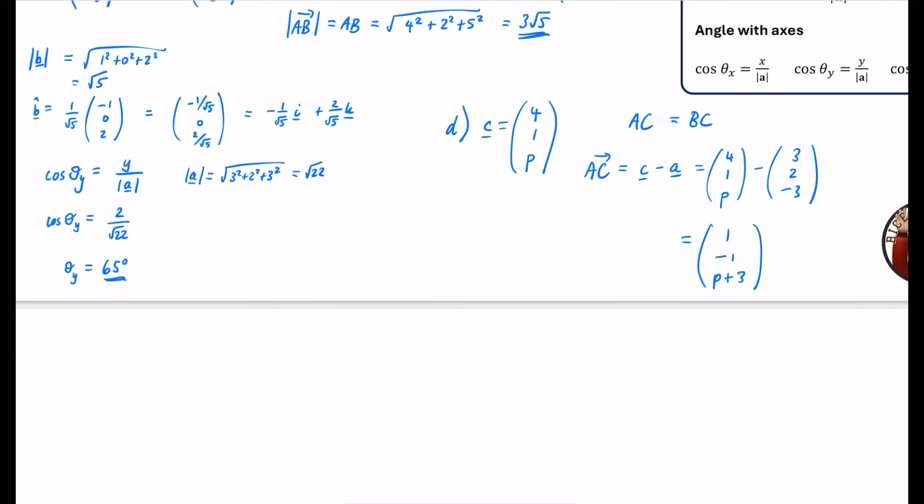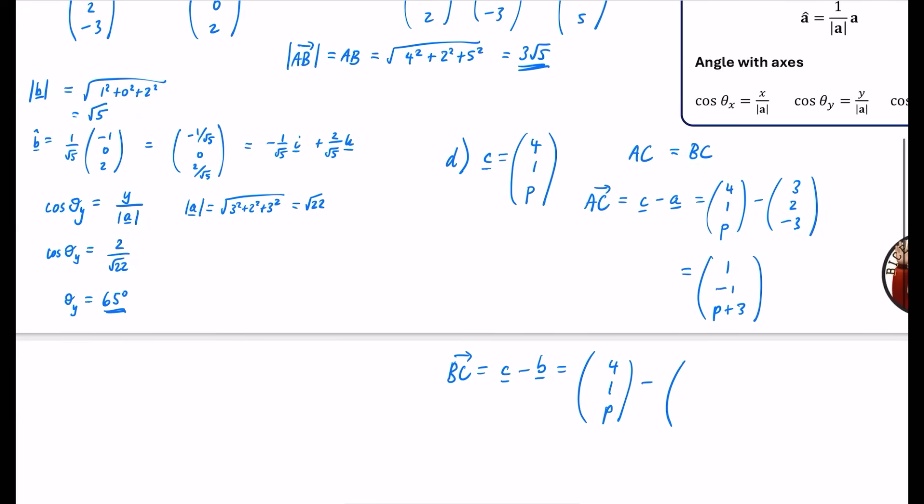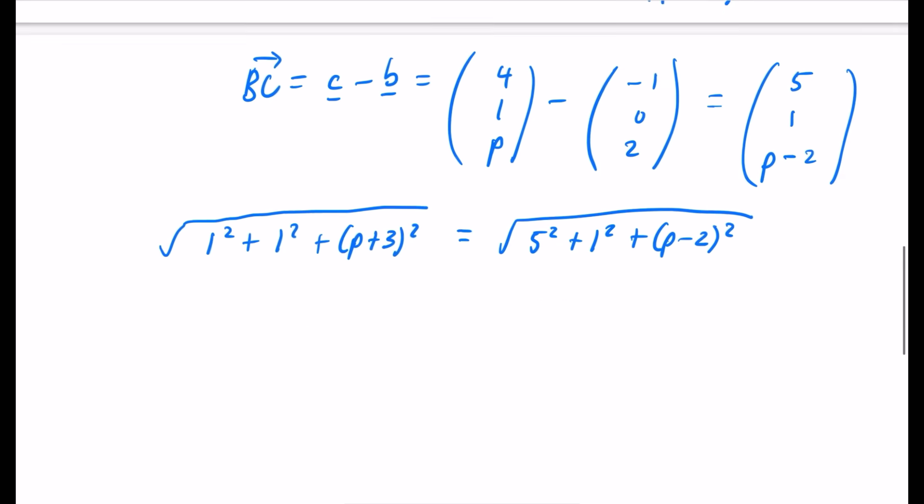So the only thing that goes wrong in these questions is if you've copied them down wrong. So I'm always checking I've got them copied down correctly. And so we have 4 minus 3 is 1, 1 minus 2 is minus 1, and p minus minus 3 is p plus 3. I'm also going to work out the BC vector. So the BC vector is going to be C minus B, which is 4, 1, p. The B vector is minus 1, 0, and 2. So that is 4 minus minus 1 is 5, 1 minus 0 is 1, and then we have p minus 2. So I now know that the magnitude of this vector is the same as the magnitude of this vector.